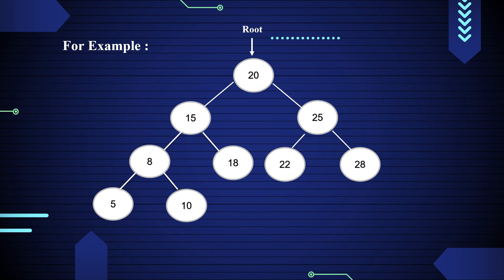Now let's see an example of pre-order traversal. Here 20 is a root node. Start with the root node 20 and first print 20. Then move to the left subtree; the root node is 15, so print 15 and move towards the left subtree of 15. There is an element 8, so print 8 and traverse the left subtree of 8. There is an element 5.